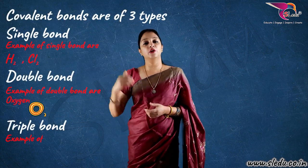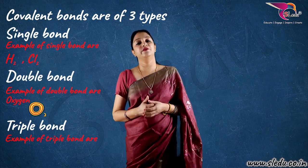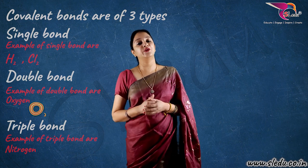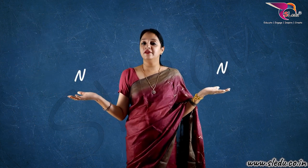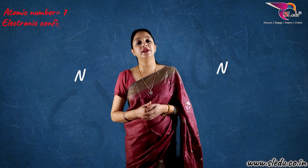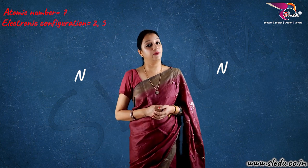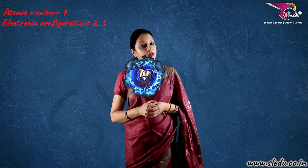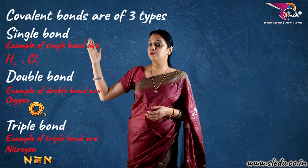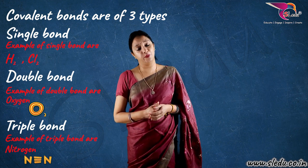Now, if I want to take the example of the third type, that is your triple bond, I can take a very simple example of nitrogen. In nitrogen, both nitrogen atoms have the symbol N. The atomic number is 7. Electronic configuration is 2 and 5. Having 5 means its last shell needs 3 more electrons. Because of the shortage of 3 electrons, they will combine with each other by sharing 3 electrons, forming a triple bond. So, single bond, double bond, and a triple bond are the basic characteristics of your covalent bond.